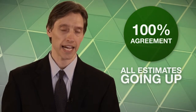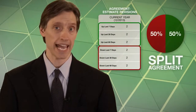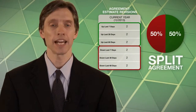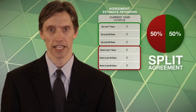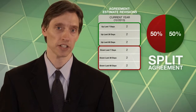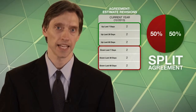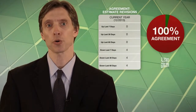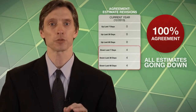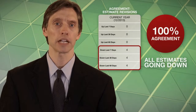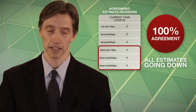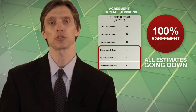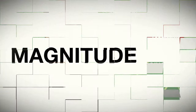If, on the other hand, half were revising their estimates up and half down, that would mean 50% of the estimates were positive — not much of an agreement. And if the majority of the revisions were down, that would show clear agreement but to the downside, which means it would score poorly on this component.